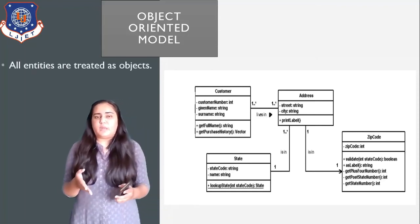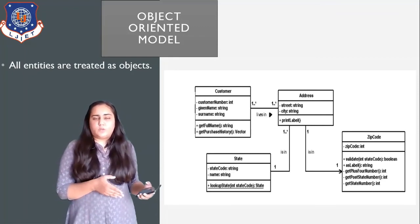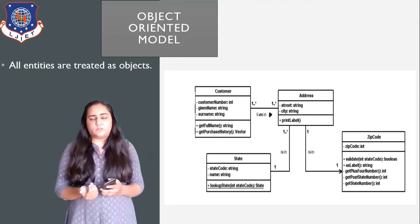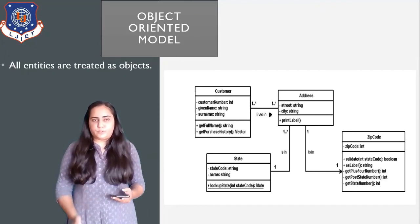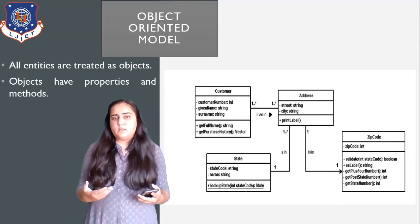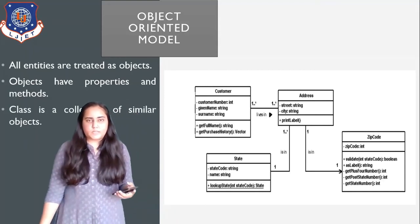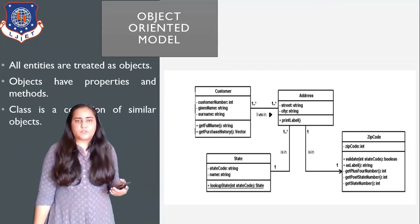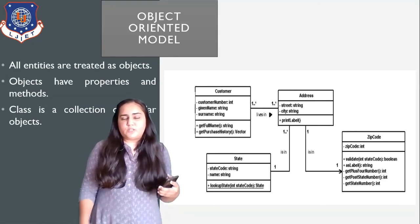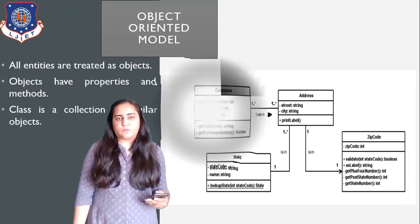If you compare it with an ER model, in the ER model we have entities — those entities in the object-oriented model are called objects. Objects have properties and methods. A class is a collection of similar types of objects, so when some objects together are similar we create a class out of those.